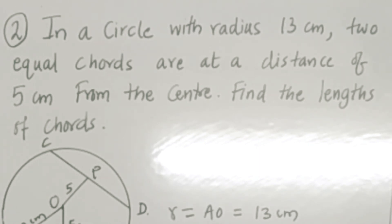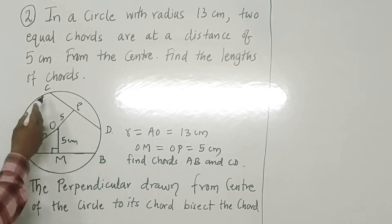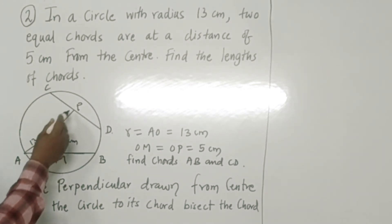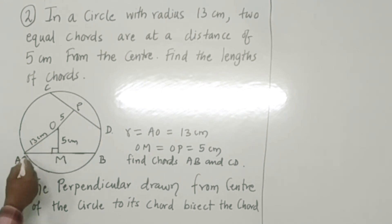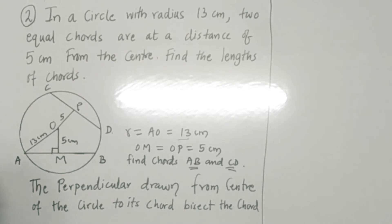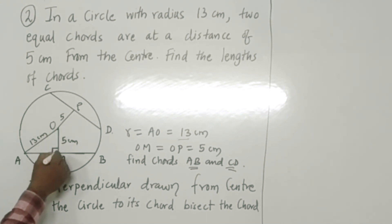Second example: in a circle with radius 13 centimeters, two equal chords are at a distance of 5 centimeters from the center of the circle. Find the length of the chord. Let us consider a circle with center O. Chords AB and CD are the two chords in the same circle. The distance of these two chords from the center is 5 centimeters each, and the radius is 13 centimeters. We have to find the length of chord AB and chord CD.